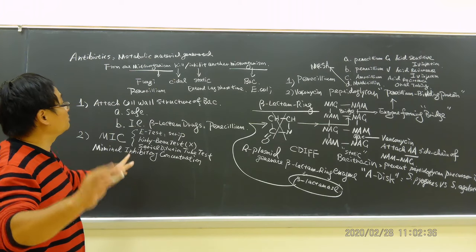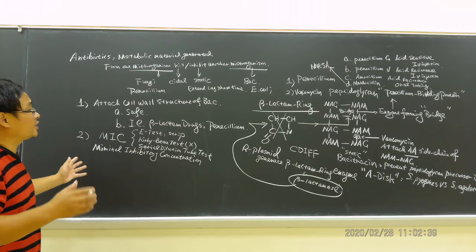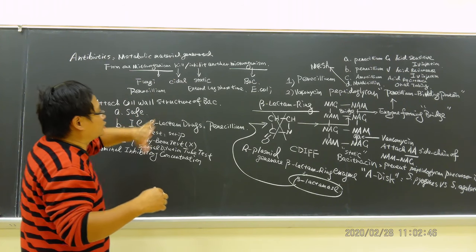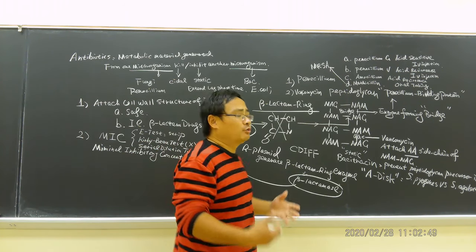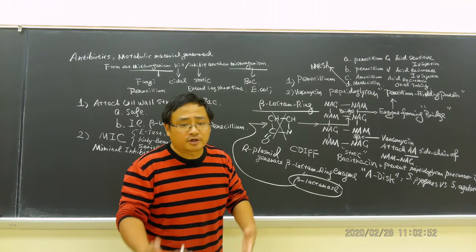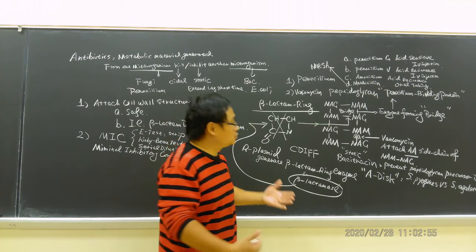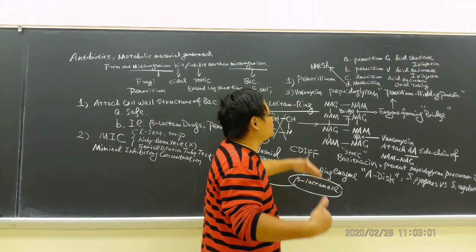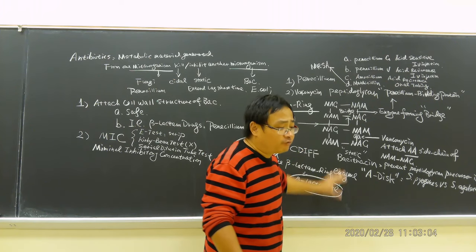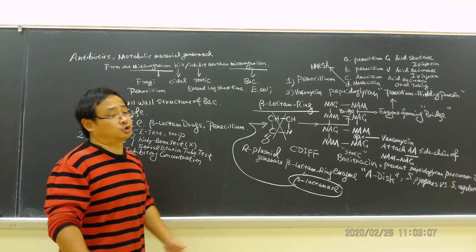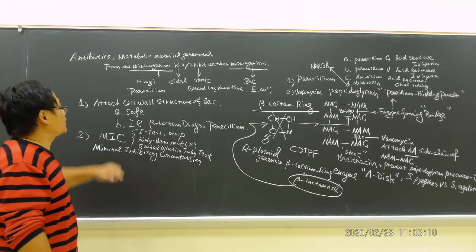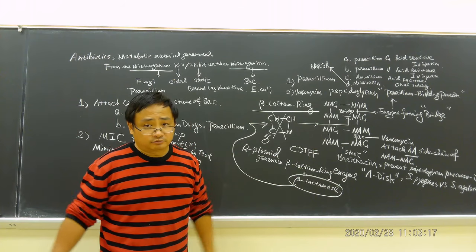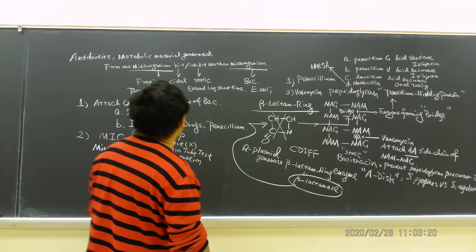One more thing I want to mention carefully: when penicillin is attacking cell wall structure of bacteria, it will be very effective during bacterial growth. Because during bacterial growth, cell wall synthesis is happening. That's why it's more effective. Once the bacteria is already formed, it is difficult to control sometimes. So this is for attacking cell wall structure. Now if any of these failed, what should we do? We don't have any choice, we have to use others.